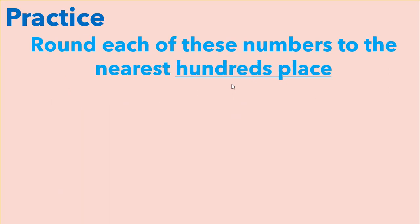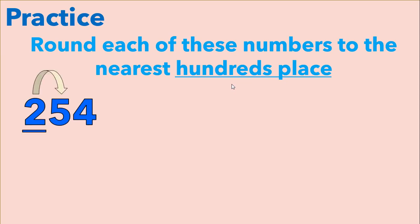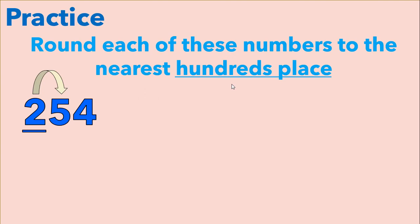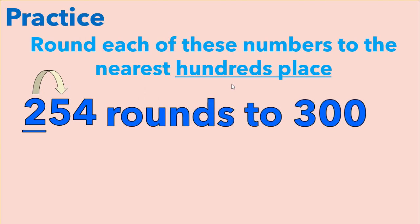Let's try rounding these numbers to the hundreds place. In two hundred fifty-four, there are two hundreds. So we're going to look at the five to determine if we're going to stay at two hundred or round up to three hundred. The five falls into the category of five or more, so we're going to raise the score of two hundred to three hundred. Two hundred fifty-four rounds to three hundred.